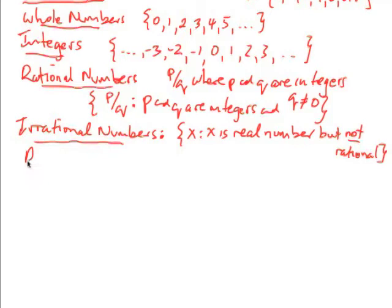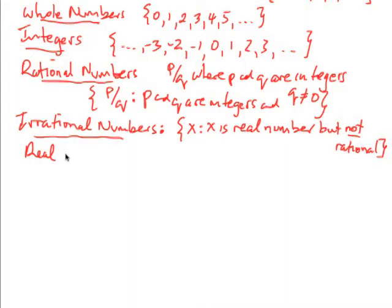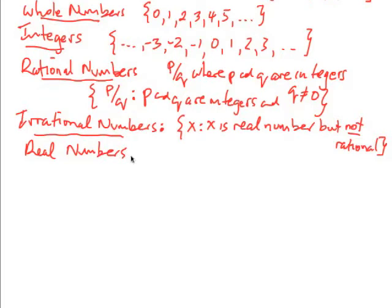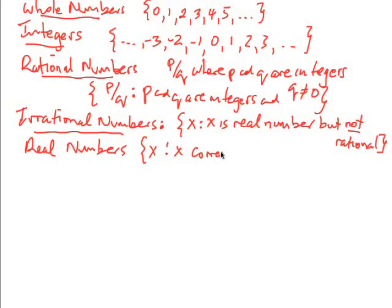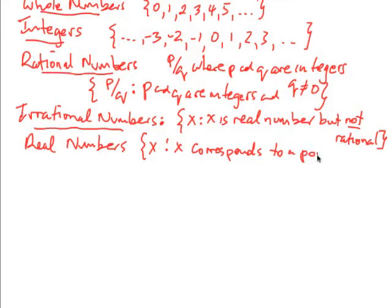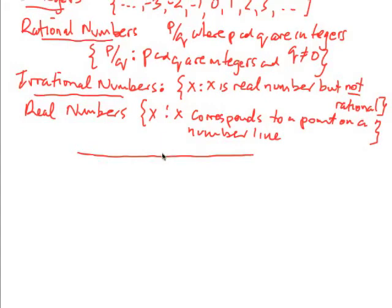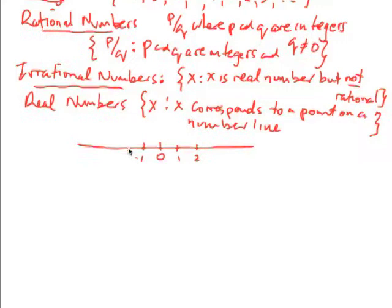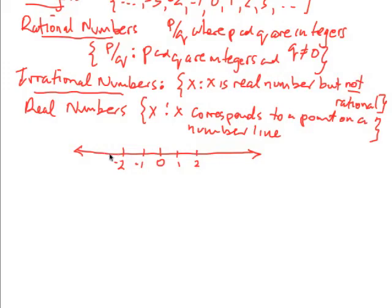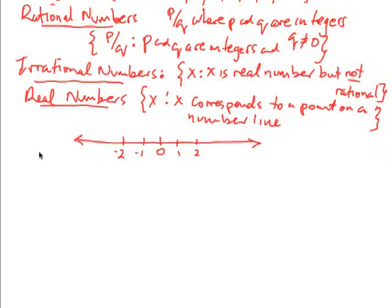Next we have what's called real numbers, which will be the largest set we'll talk about for a while until we get to complex numbers. Real numbers are any number X that we can put on a number line — where X corresponds to a point on a number line. A number line is divided in half by zero, with one, negative one, two, negative two, and so forth, with arrows to show it goes both ways forever. Any point on here would represent a real number.